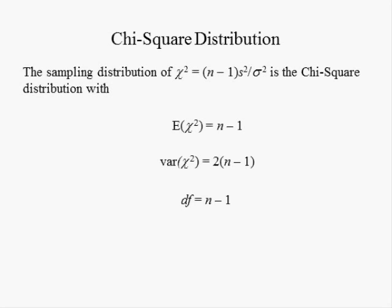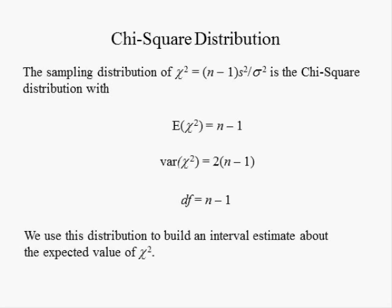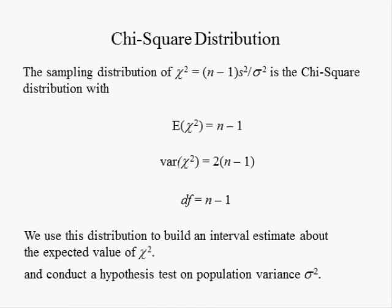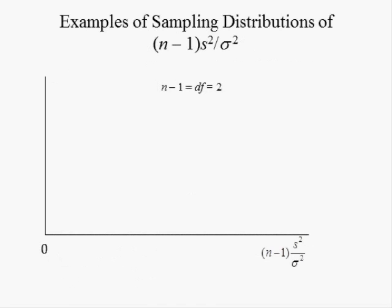Note that n minus one is the denominator in the sample variance equation. We can use this distribution to build an interval estimate about the expected value of chi-square and conduct a hypothesis test on population variance sigma-squared. If the sample size is three, the degrees of freedom are equal to two, and n minus one times S-squared divided by sigma-squared equals two times S-squared divided by sigma-squared, which is denoted chi-square.